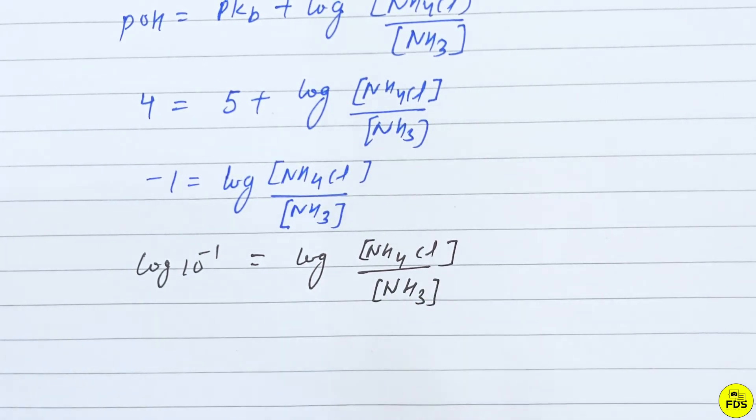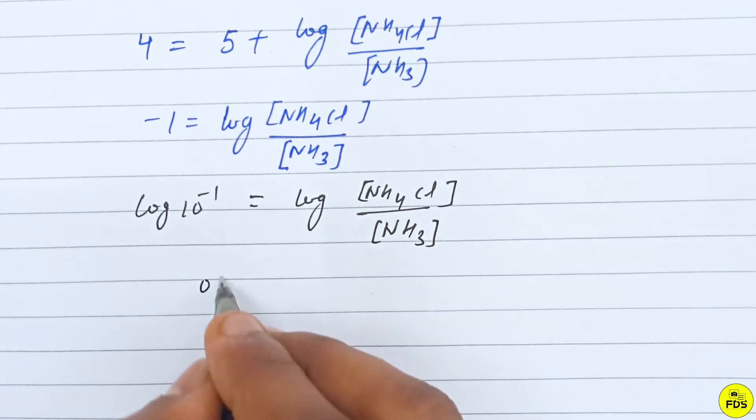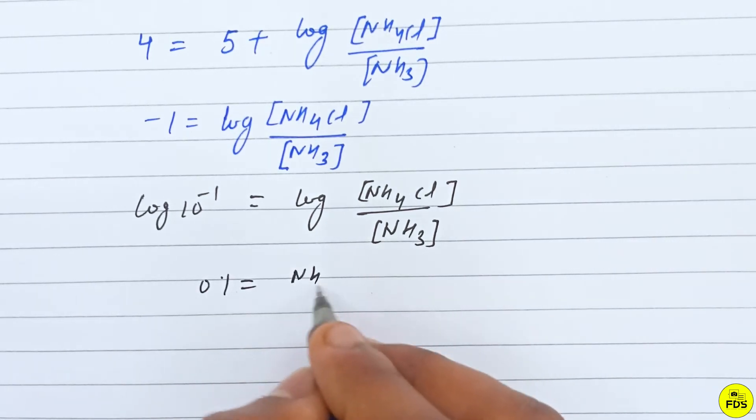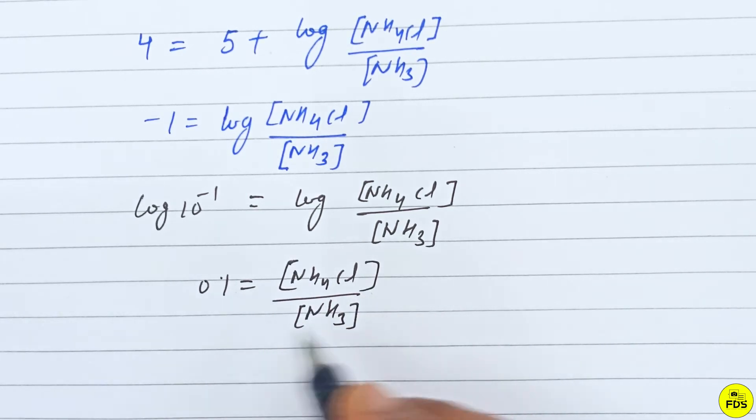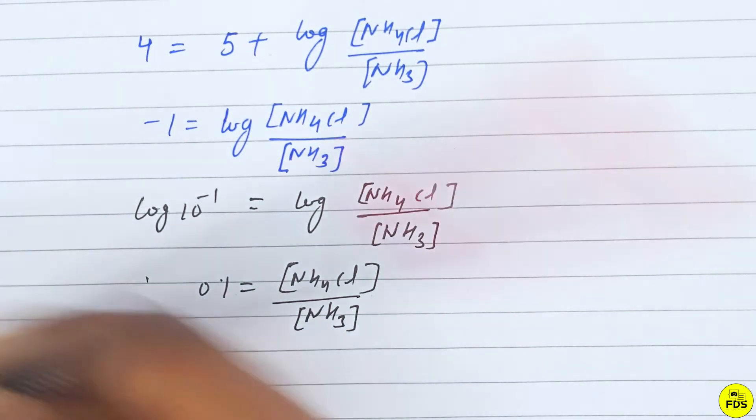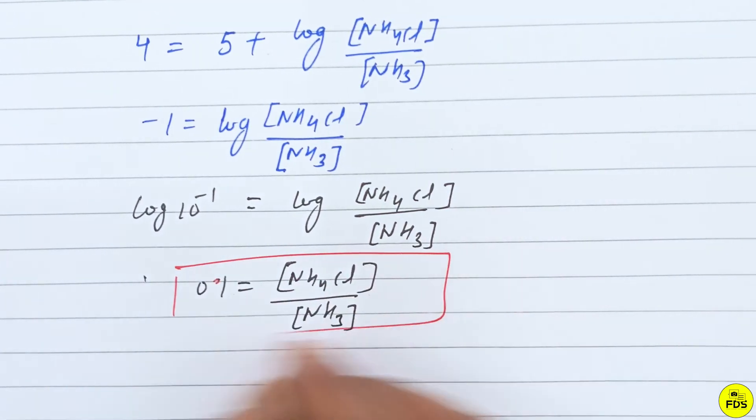Canceling the logs, 0.1 is equal to NH4Cl upon NH3. The salt upon base concentration ratio is 0.1.